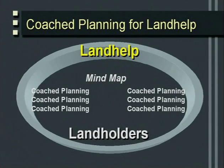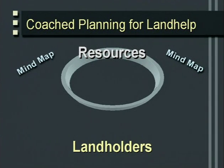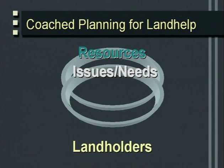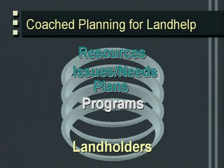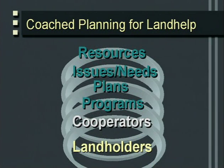The philosophy is land help — how we can work the land better. The client, the customer, the person who's going to get the job done is the landowner. Coached planning is the process we go through to help the landowner do their job better. You need to think about what resources we have as planners, what issues and needs the clients have, what plans can be done, what programs we have to offer, how we work with cooperators to implement programs, and eventually reach the land help goal.